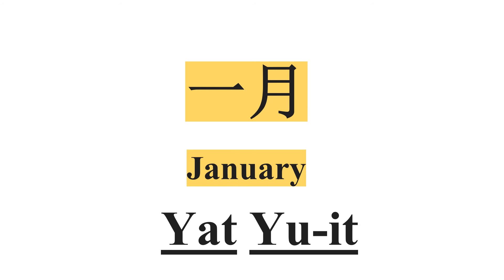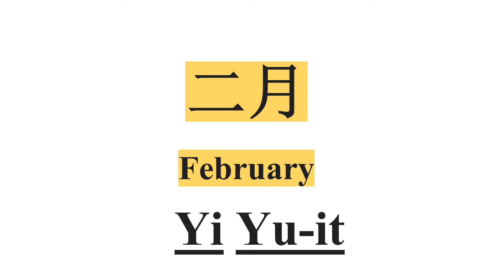Next we have February — 二月. It's pronounced as 二月. 二 means two, so it's the second month — 二月.